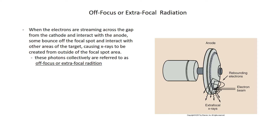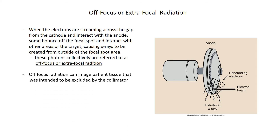Off-focus or extrafocal radiation occurs when electrons streaming across the gap strike the anode and some bounce off the focal spot, interacting with other areas of the target and causing x-rays to be created outside the focal spot area. These photons are collectively referred to as off-focus or extrafocal radiation. You see this when collimating down and still seeing a tissue shadow — off-focus radiation can image patient tissue that was intended to be excluded by the collimator. A grid will not reduce off-focus radiation because it originates at the tube.